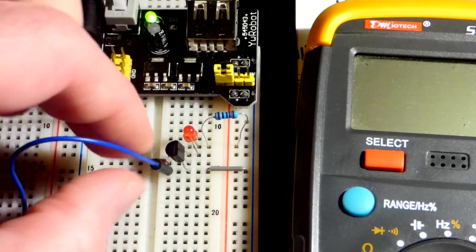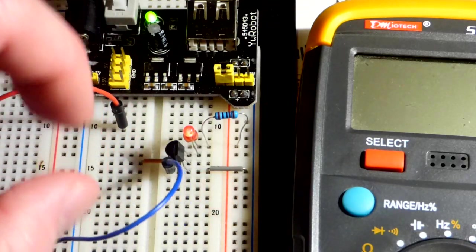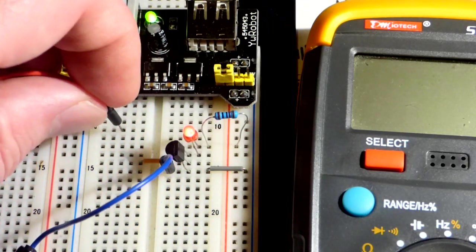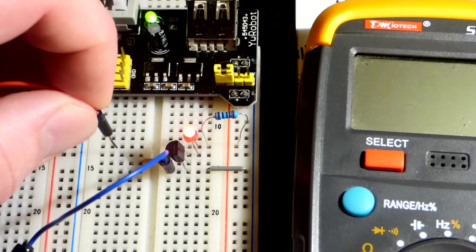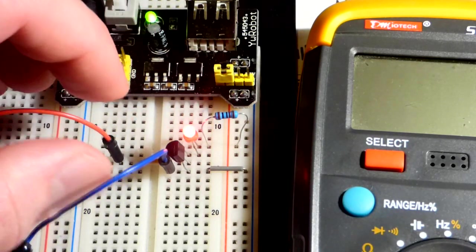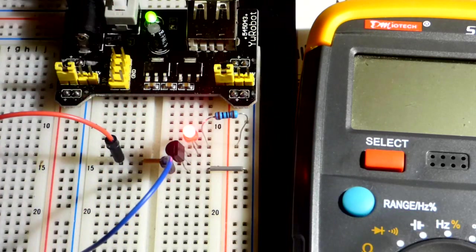We're going to put this to the negative there. And you can see the LED slowly coming back. And it just takes a small charge at the gate to affect things. But now it is fully on.